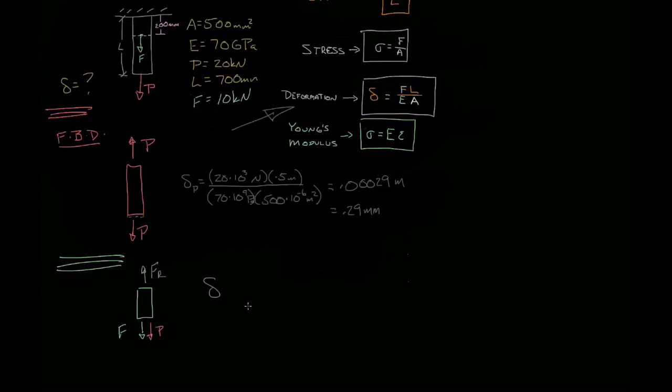Now we can use our deformation equation. So the deformation due to F equals the force of 30 times 10 to the third Newtons times not 0.5 meters, but 0.2 meters is the length. And of course, the denominator is the same. 70 times 10 to the ninth Pascals times 500 times 10 to the negative six square meters. The deformation in this section is 0.00017 meters or 0.17 millimeters.